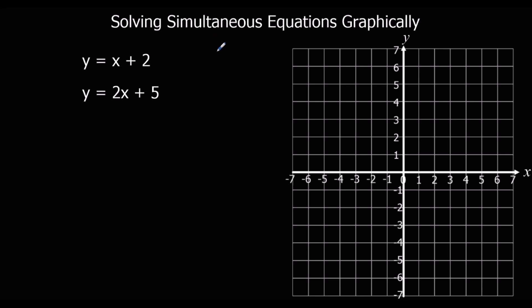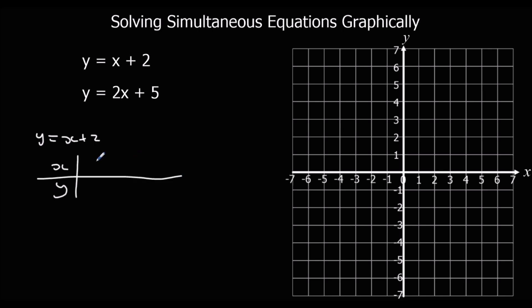So what we've got to do is draw the graphs. We've got y equals x plus 2, so if we draw a table, we only need to do three points, so let's do 0, 1, and 2. If x is 0, y is 2; if x is 1, y is 3; and if x is 2, y is 4.